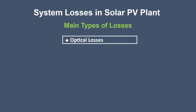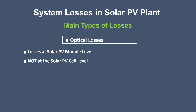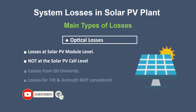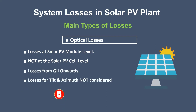Let's know more about the optical losses. Before we proceed further, please take note of two things. First, we are discussing at the solar PV module level, not at the solar cell level, because solar cells have their own different set of losses — and that is another video. Second, we are talking about the losses occurring at the module's tilt plane, that is from GII onwards. So losses in irradiance due to tilt angle and azimuth are not covered here.